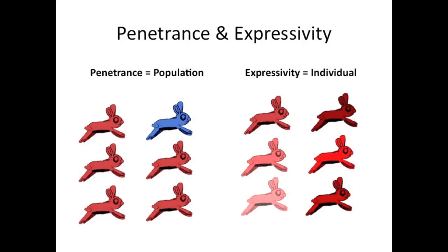Expressivity, on the other hand, would look something like this: all of these bunnies have the gene for red, but they vary in how red they are — they each have different expressivities. This explains why the same breed of dogs, like beagles, can have such varied coat coloration — they're expressing the gene for coat color at varying levels. For genetic disorders, the difference would be in how symptomatic an individual is: if you have all the symptoms, that's highly expressive; if you have just a few or none, then it's weakly expressive.